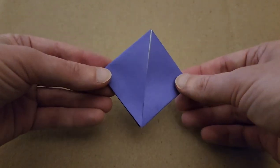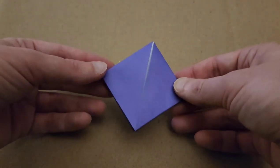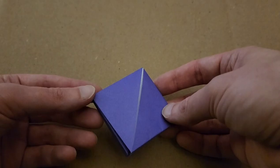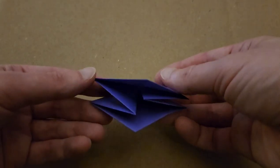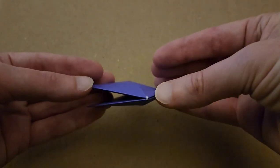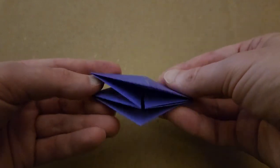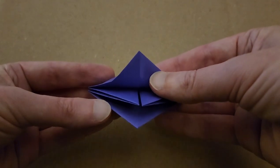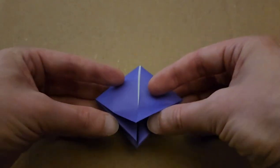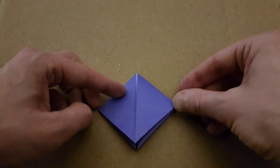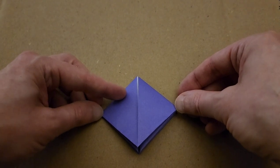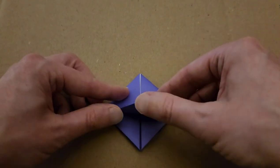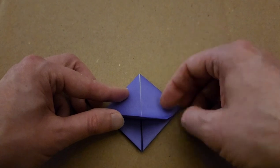And believe it or not, the hard part is done. Alright. Okay, so at this point you'll notice that one of the tips is closed and the other is open. So we're going to take just this front flap here and use these two points on the sides as a guide. And folding this point to the top.